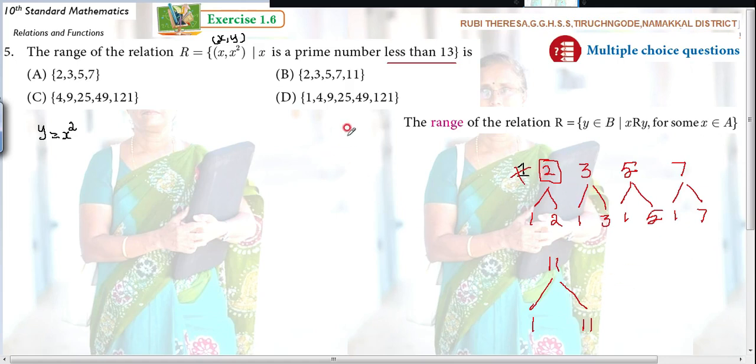Then, what are the numbers you got for X? X belongs to 2, 3, 5, 7, 11. So just write the ordered pairs. What are the ordered pairs you will get? Actually, what is the condition? X comma X squared. That means 2, 2 squared. Next one is 3, 3 squared. 5 comma 5 squared. 7 comma 7 squared. 11 comma 11 squared.